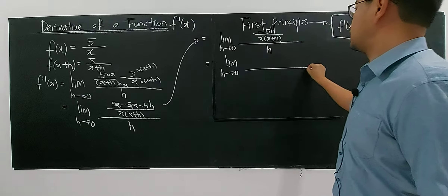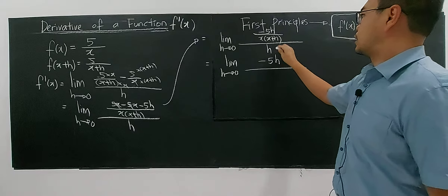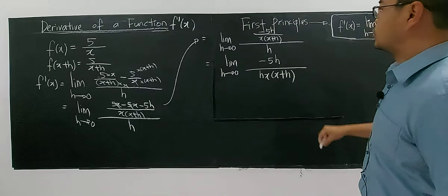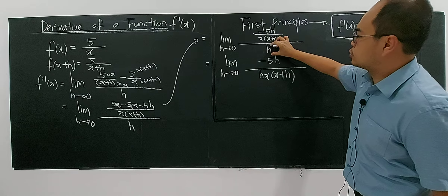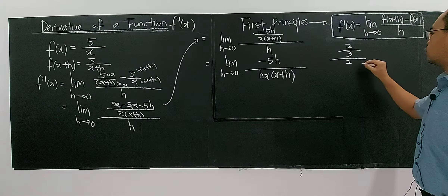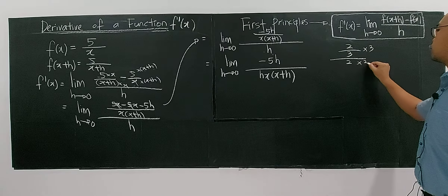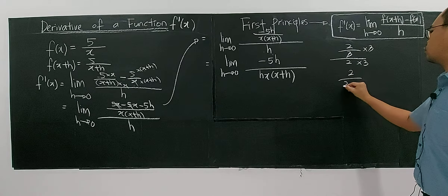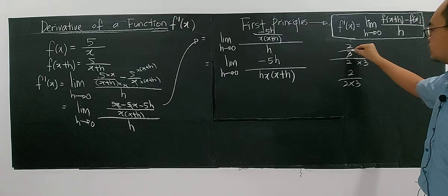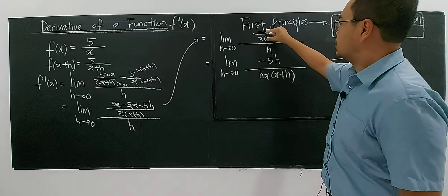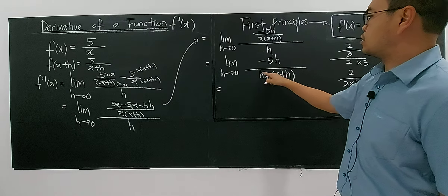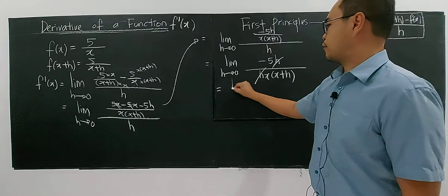I can rewrite this fraction as negative 5h divided by h·x·(x+h). For example, if you have 2/3 divided by 2, that is the same as 1/3 times 2 — dividing by h means h moves to the denominator. So now you can see that h approaching zero allows us to cancel the h factor, since it appears in both numerator and denominator.